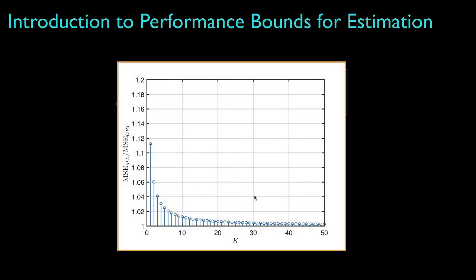Here, for instance, is a plot of the mean square error for the maximum likelihood estimator divided by the mean square error for the optimized maximum likelihood estimator as a function of the number of samples. Whereas we can improve on the mean square error for small numbers of samples, the improvement becomes much less as the number of samples increases.